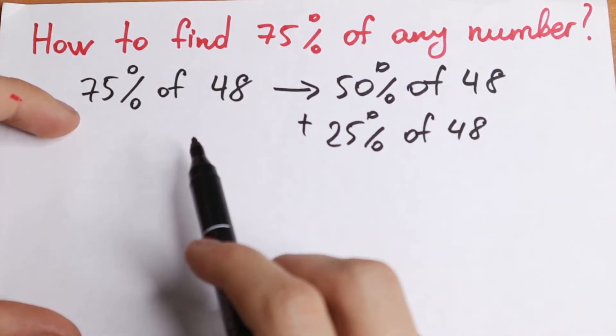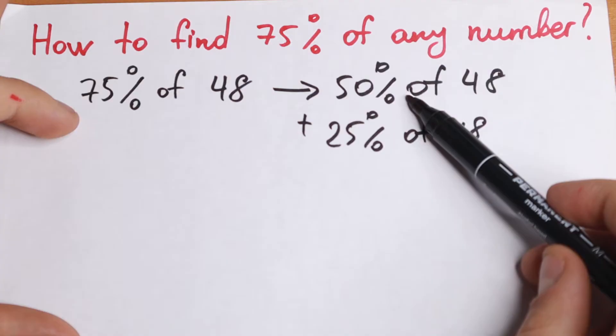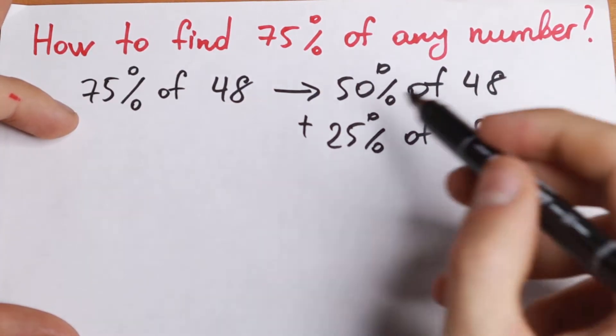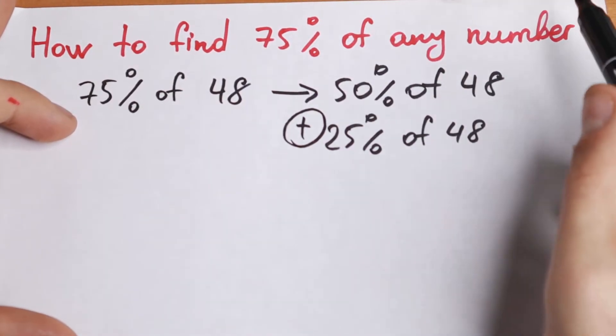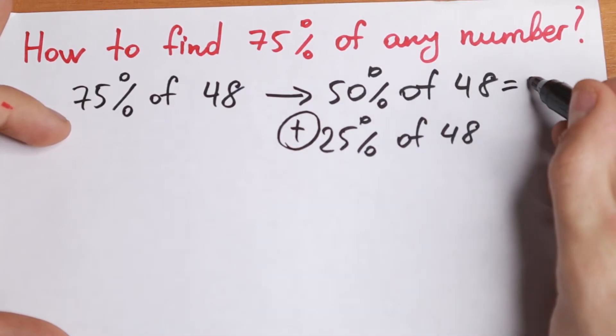Take a look. If you want to find 75%, you need to find at first 50% and add 25%. So in our case, let's find 50% of this 48. If this is a half, so 24.